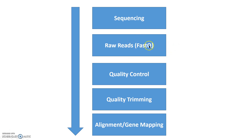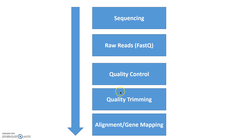The first thing you should do is look into those FASTQ files and check the quality of the base pairs. Once you know the quality, you can do quality trimming, which will remove bad quality bases and try to make your sequences more reliable when you analyze them later on. The most important step afterwards is the alignment or gene mapping that you do with these sequences.